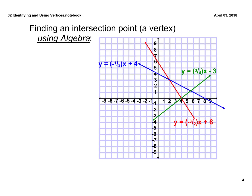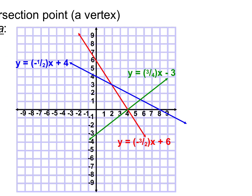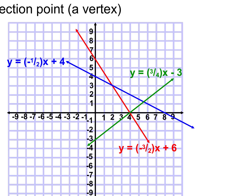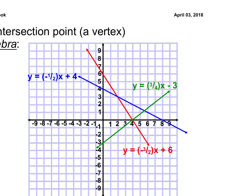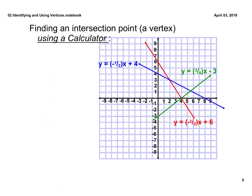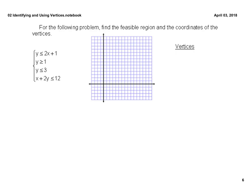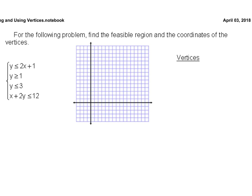Let's move on to the next page. Here is a typical test question: for the following problem, find the feasible region — where is the little triangle or rectangle — and the coordinates of the vertices. You should be able to graph these by hand, and some of them you'll be able to tell the intersection points just by looking. For the rest, use your calculator.